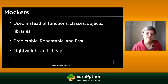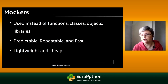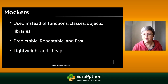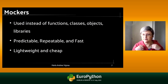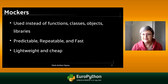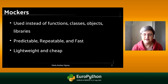Fake objects should be predictable, so every time you run the test it should give you the same output — repeatable and fast. Because when you have tests that take too much time, you tend to avoid using them every time. The usability of the test means they need to be lightweight and cheap.